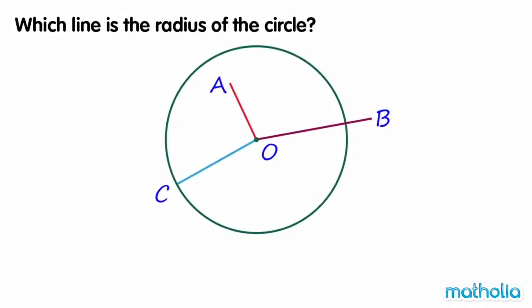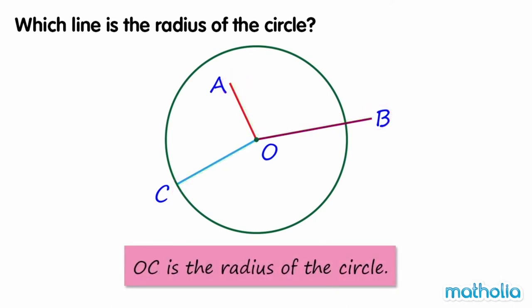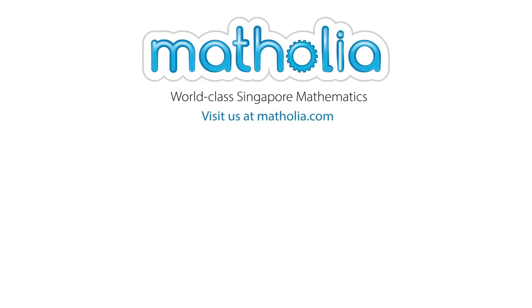Which line is the radius of the circle? Line OA is not a radius as point A is inside the circle. Line OB is also not a radius as point B is outside the circle. Line OC is a radius as point C is on the circle.